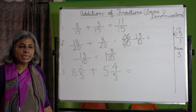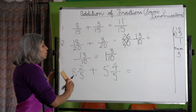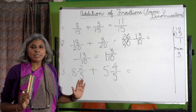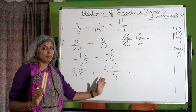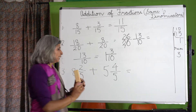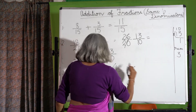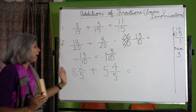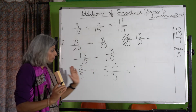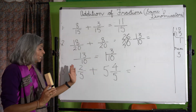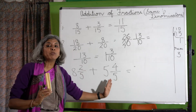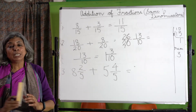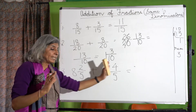Then we come to a mixed number addition. With the same denominator, we add the whole numbers: 8 plus 5 is 13. Then we have 2 upon 5 plus 4 upon 5, which becomes 6 upon 5 — which is an improper fraction. So instead of adding it like this, what do we do? We change both mixed numbers into improper fractions.